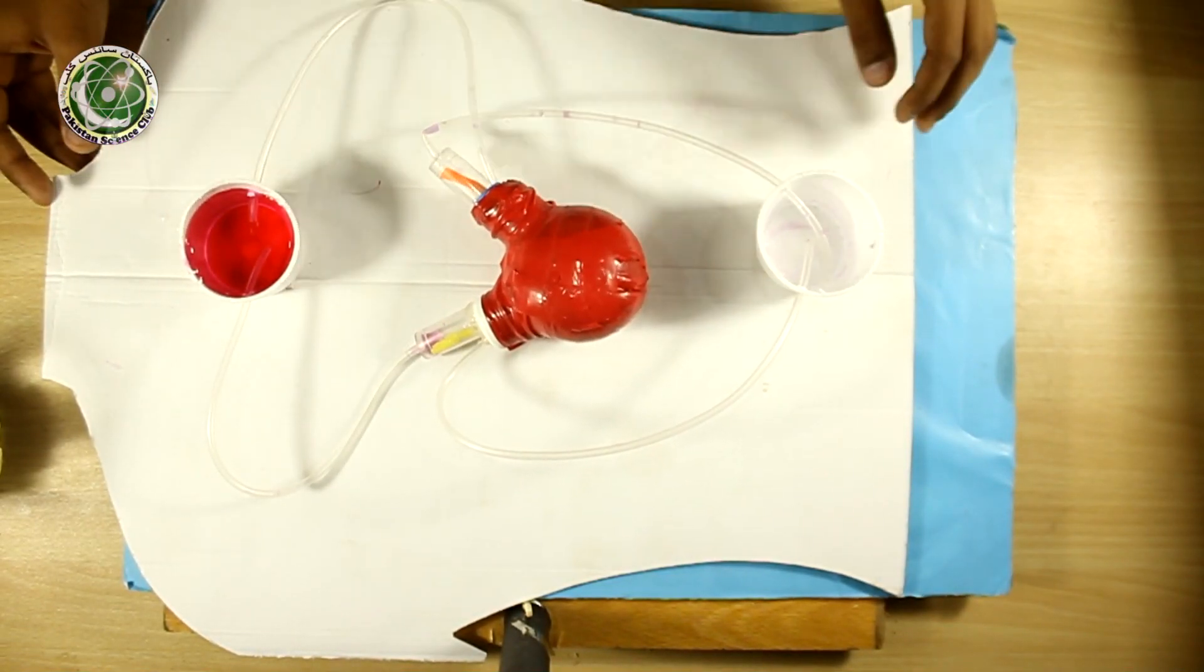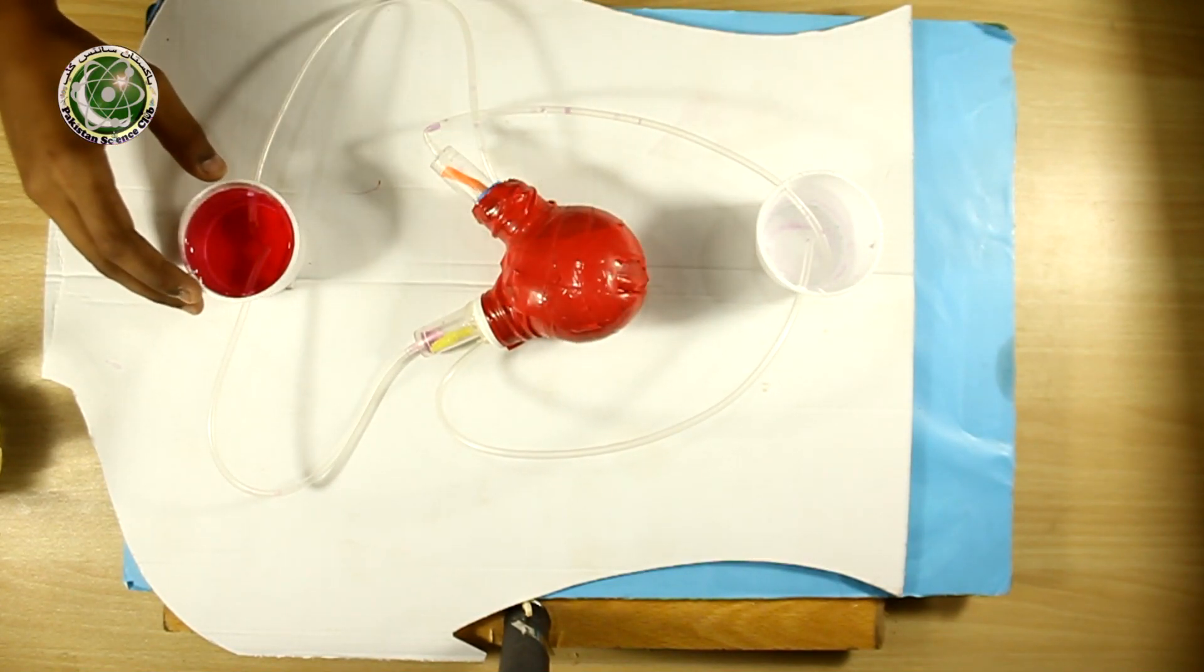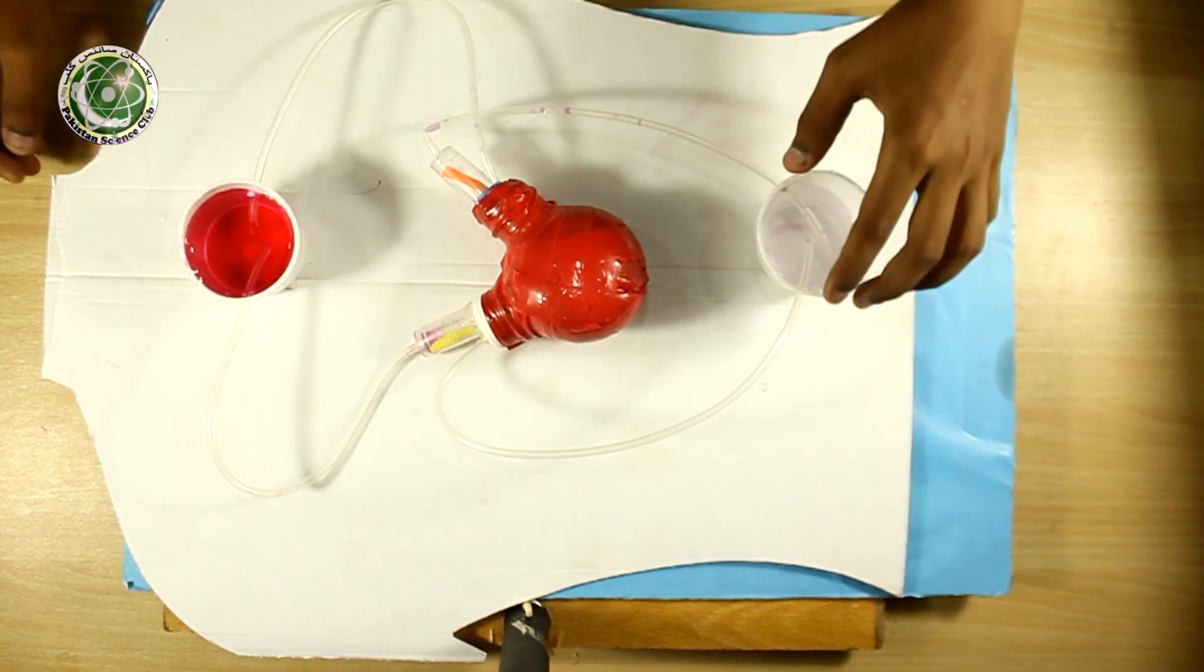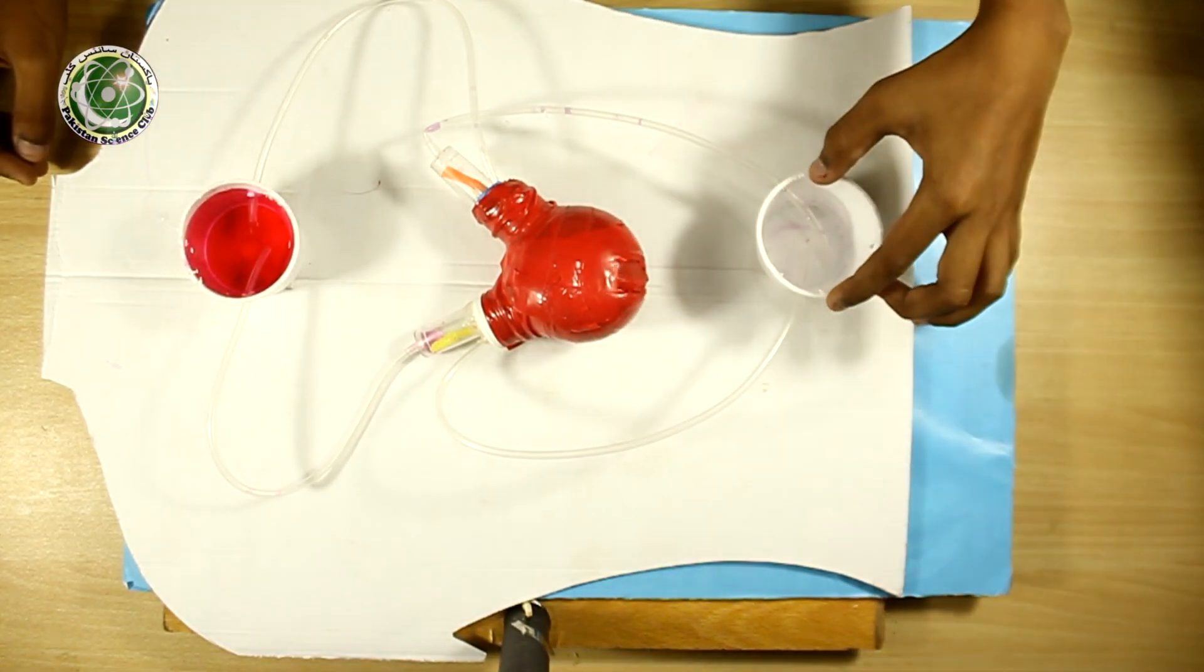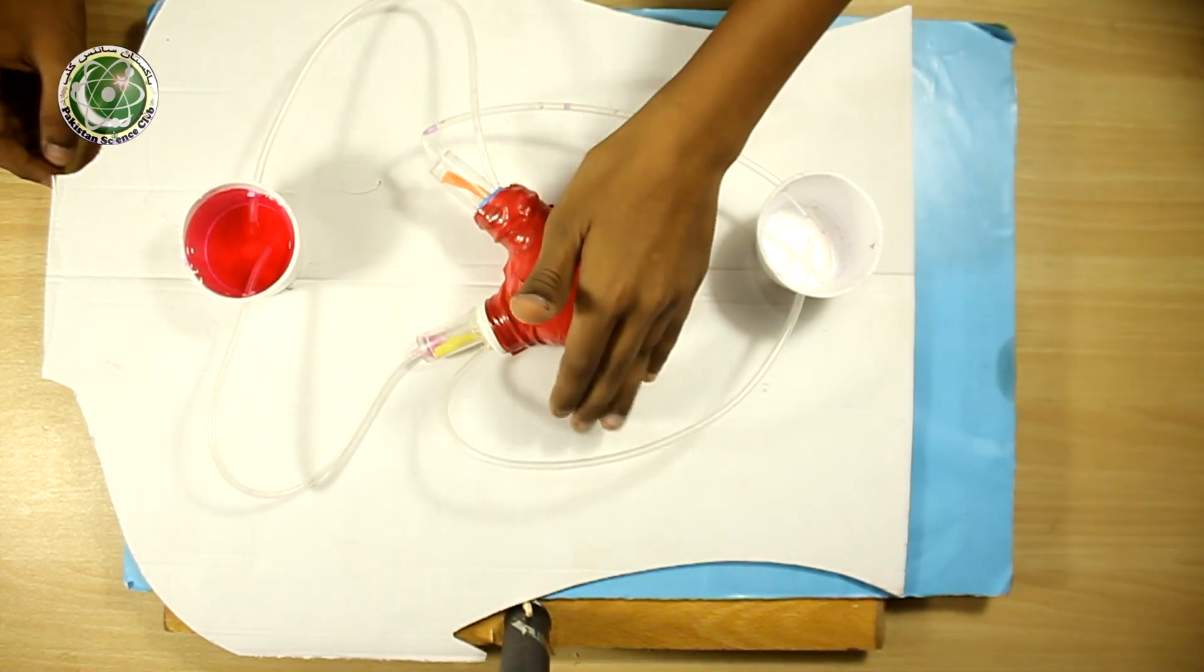This is the body structure. Heart is in the middle. This is a cup filled with colored water which represents lungs, and this cup represents body. So let's test it.